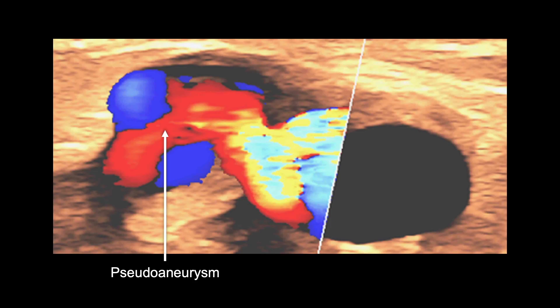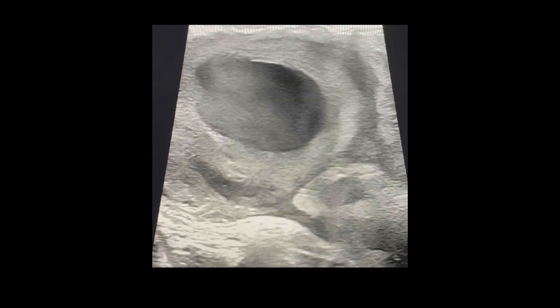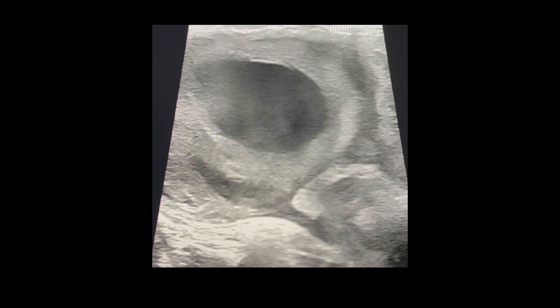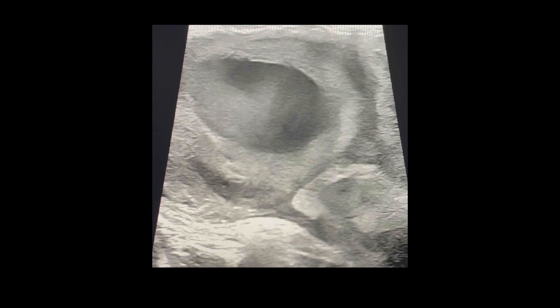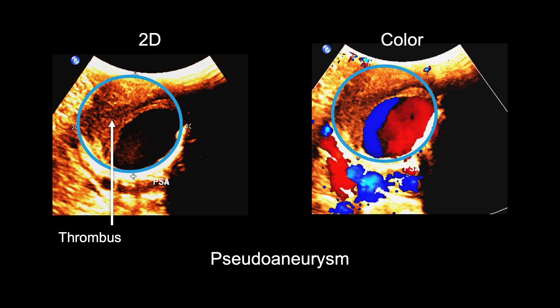In this image of a pseudoaneurysm, you can see both blue and red areas as the blood is swirling in opposite directions. Sometimes you can see the neck, or trail of blood, leading from the outflow vein to the blood collection in the tissue. This 2D video shows the slow-moving blood cells swirling within the pseudoaneurysm, which creates the yin-yang sign when color is applied. You can also see the to-fro of the cells in the neck on the bottom right. This image shows a pseudoaneurysm with thrombus in 2D on the left and then in color on the right, where you can see the yin-yang sign.